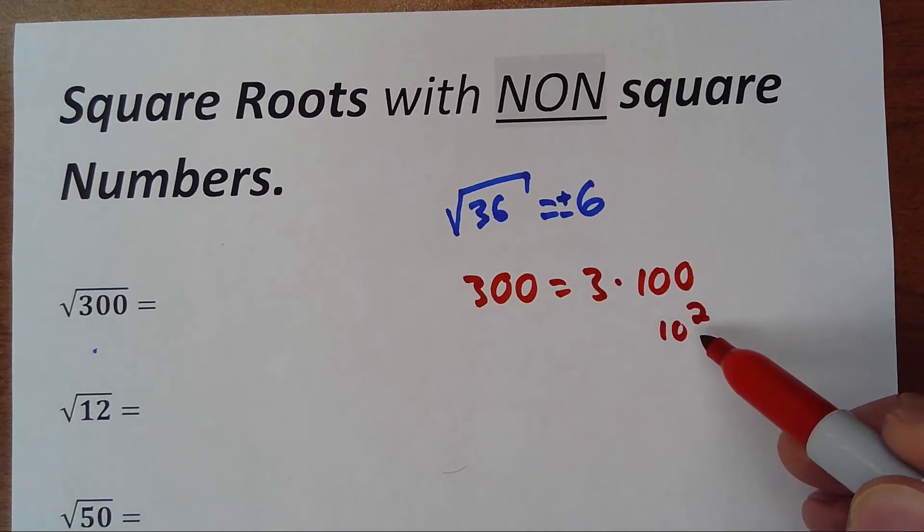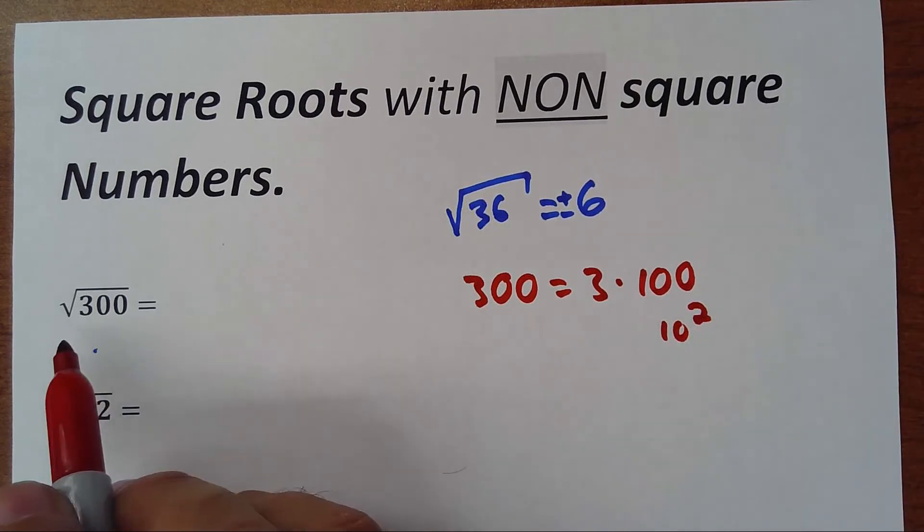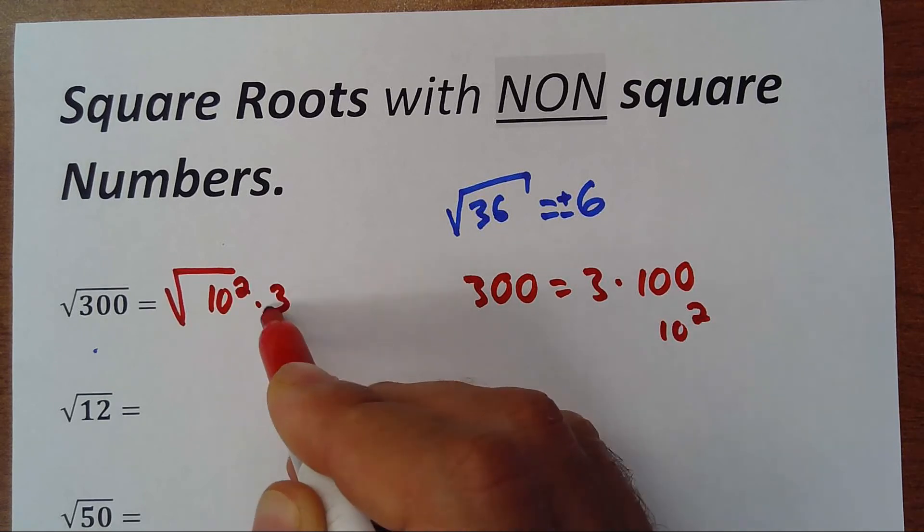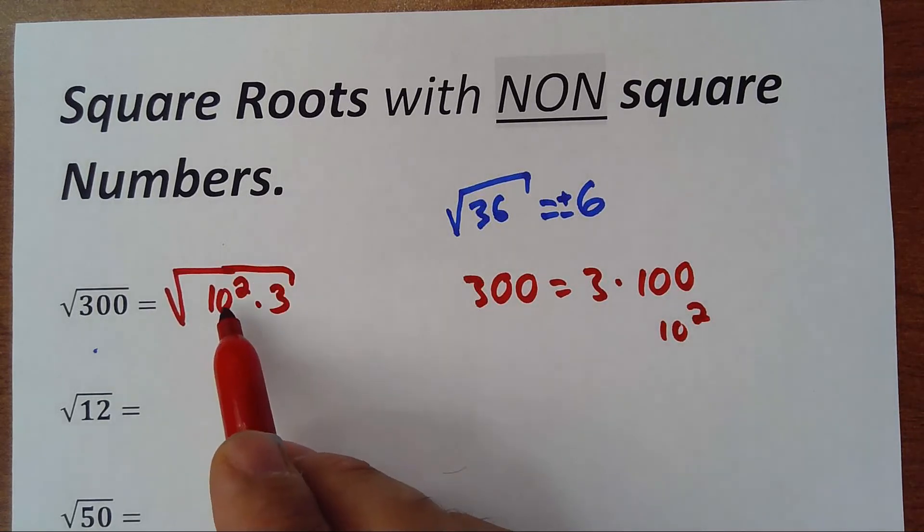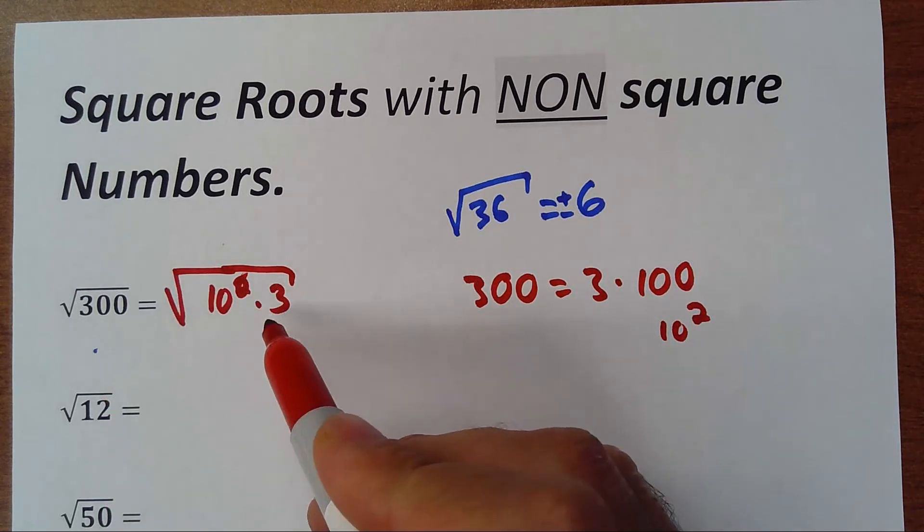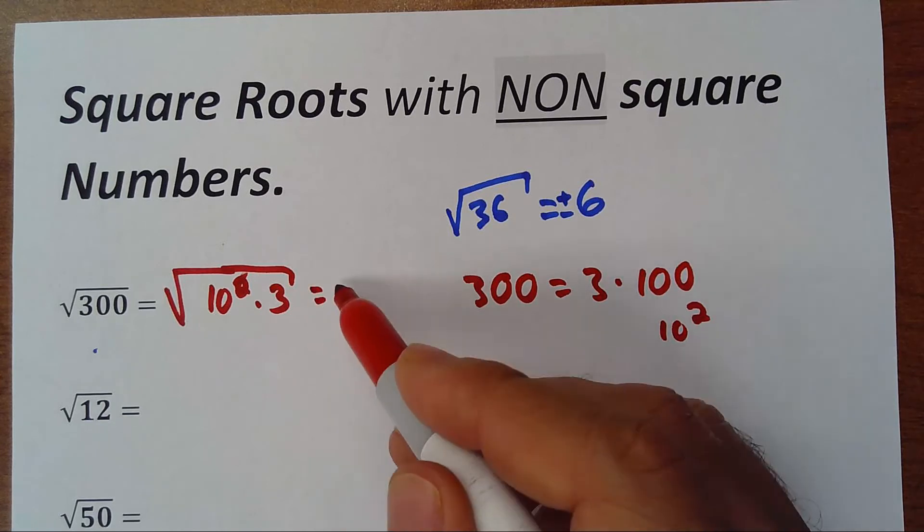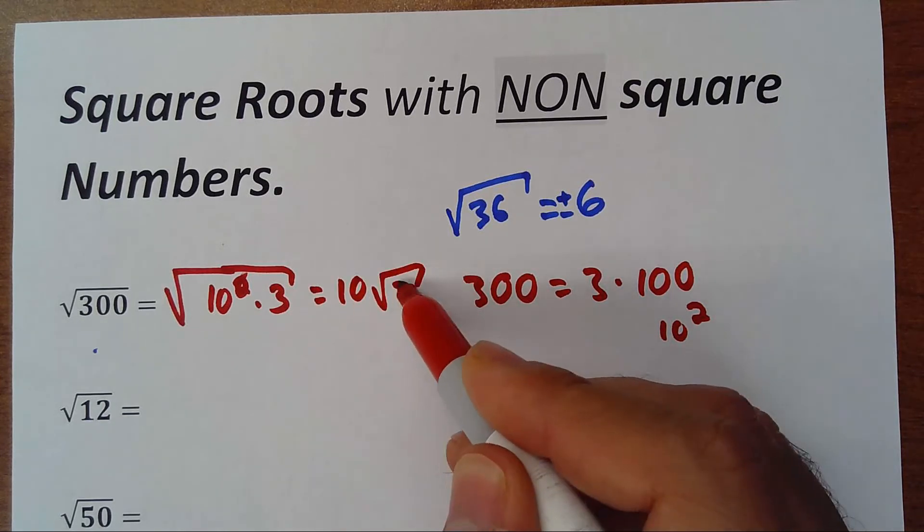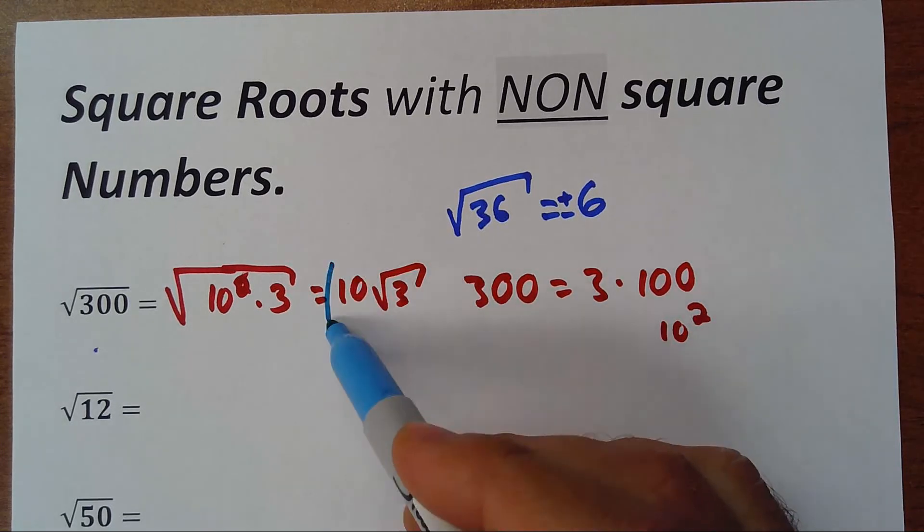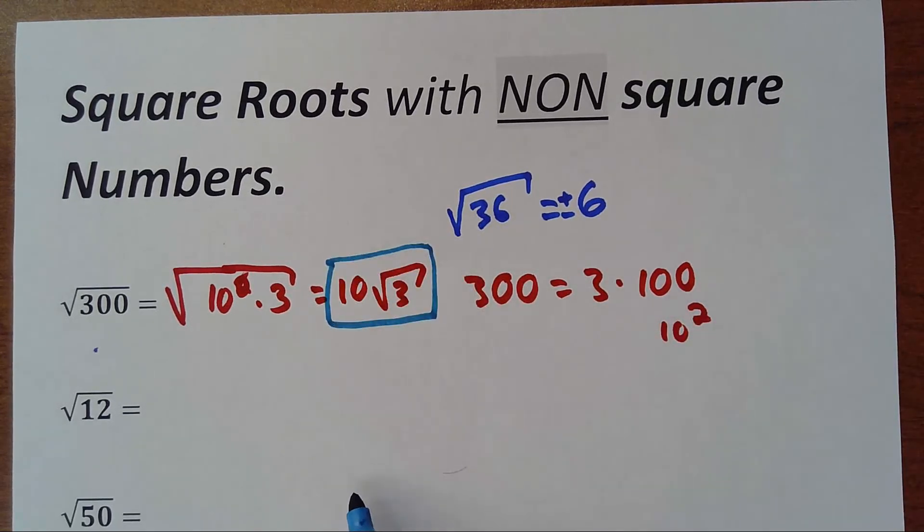So square root of 300 is the same as square root of 10 squared times 3. Now the 10—the square of the 10—simplifies with the root and the 10 goes outside, but the 3 stays inside. So the answer would be 10 square root of 3. Once you get practice, you'll do this very quickly.